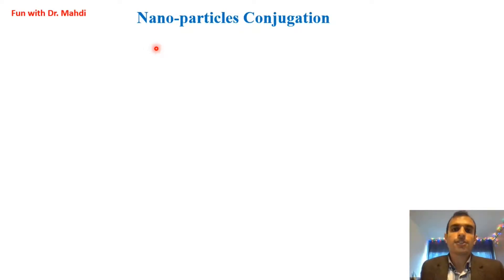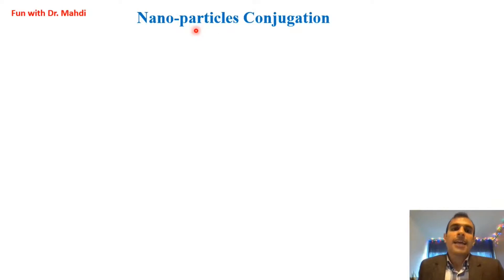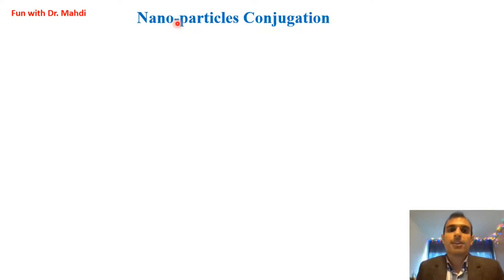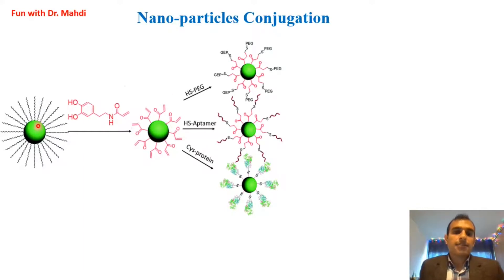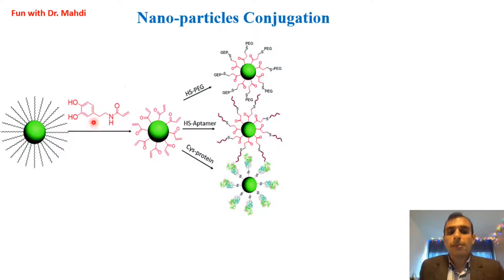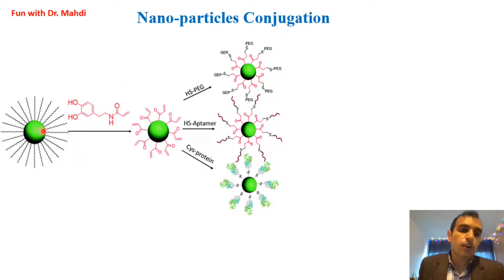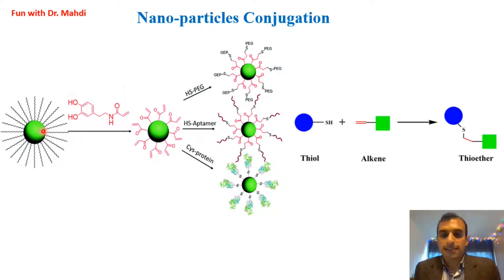In the following, I would like to give you some examples about bioconjugation. I would like to start with nanoparticle conjugation — we would like to have some biomolecules on the surface of nanoparticles. Nanoparticles are not biomolecules, so the second part that we want on the surface should be a biomolecule. Here you can see a general schematic. We have nanoparticles, and in the next step we cover the surface with dopamine acrylamide, which contains an alkene group.